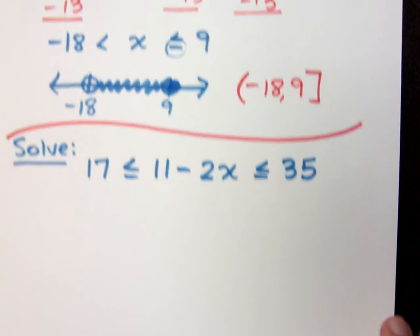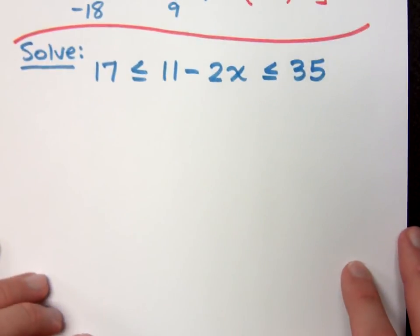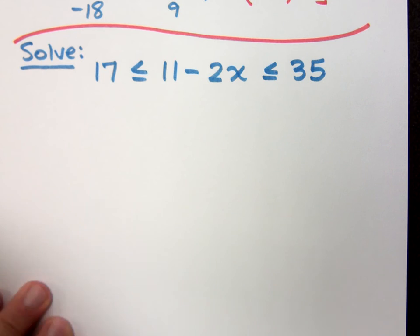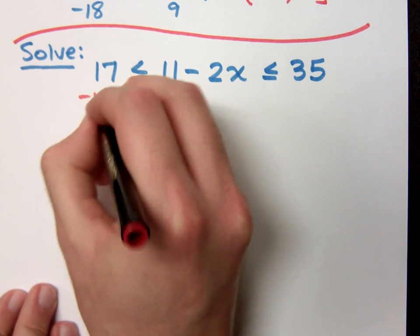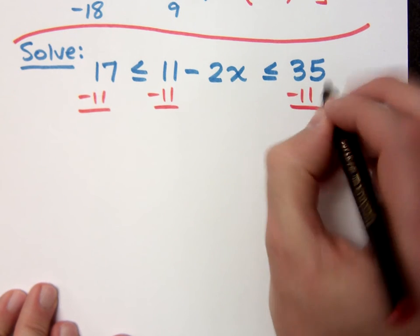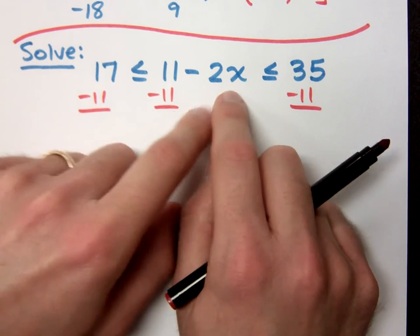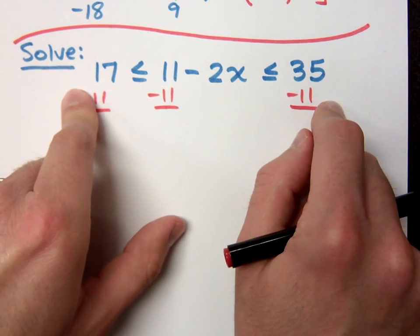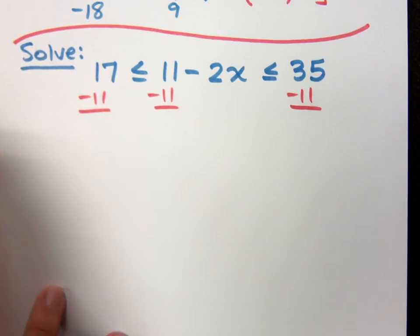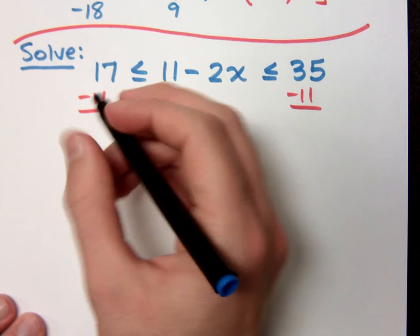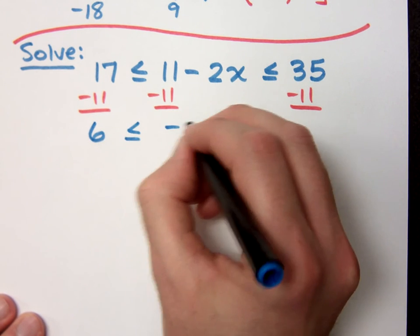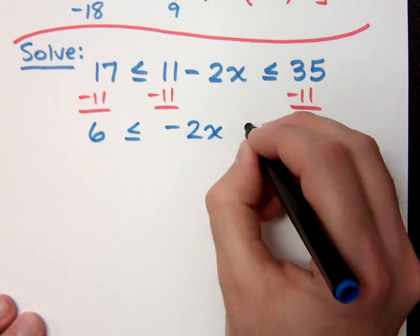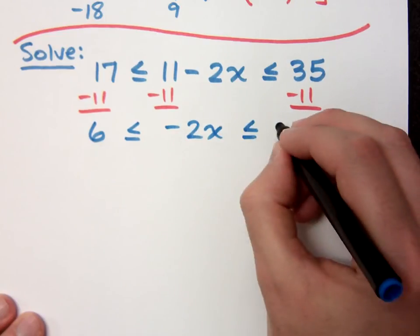So what we're doing is that we're basically taking these two inequalities and we're solving them at the same time. So I'll start off by moving the 11 over. Remember, your x must stay in the middle. Do not try to take this guy and move him to the outside. That will not go well for you at all. So now I have that 6 is less than or equal to negative 2x, which is less than or equal to 24.